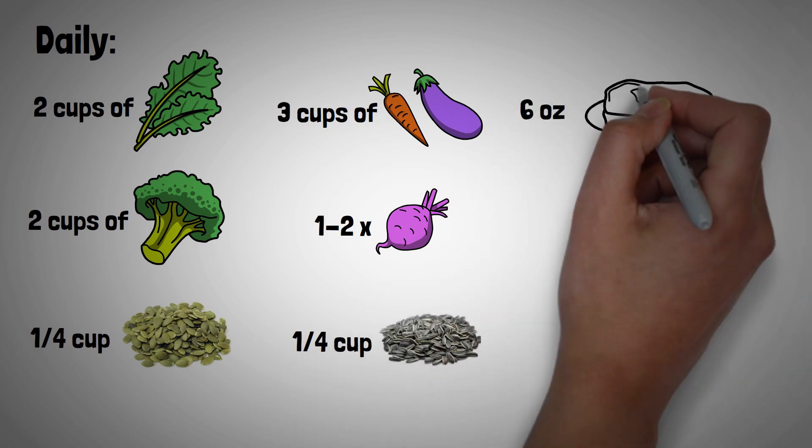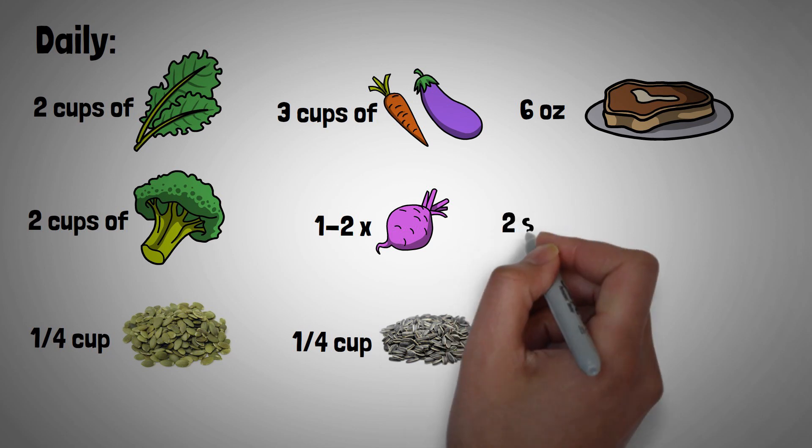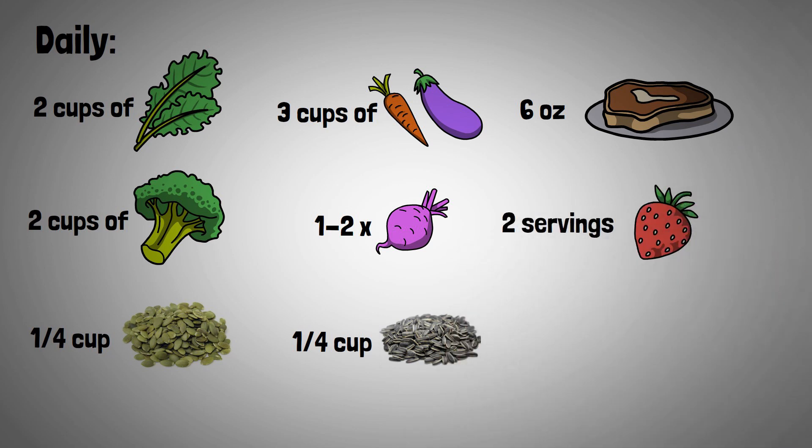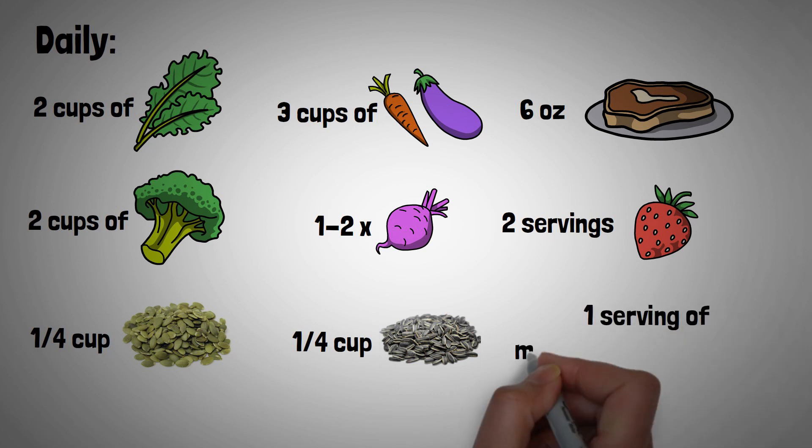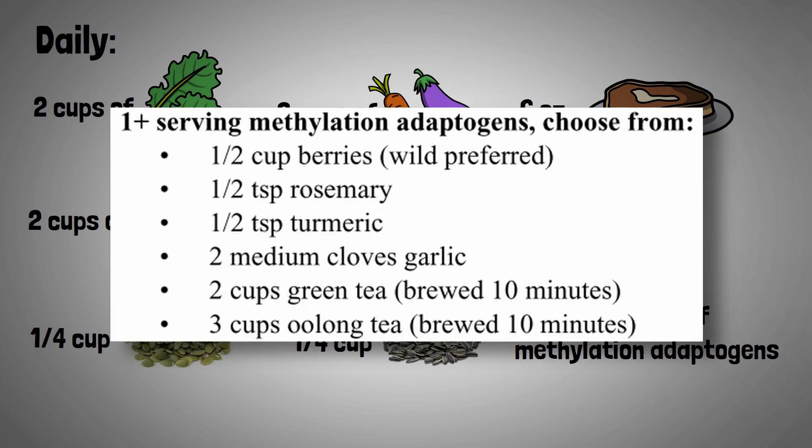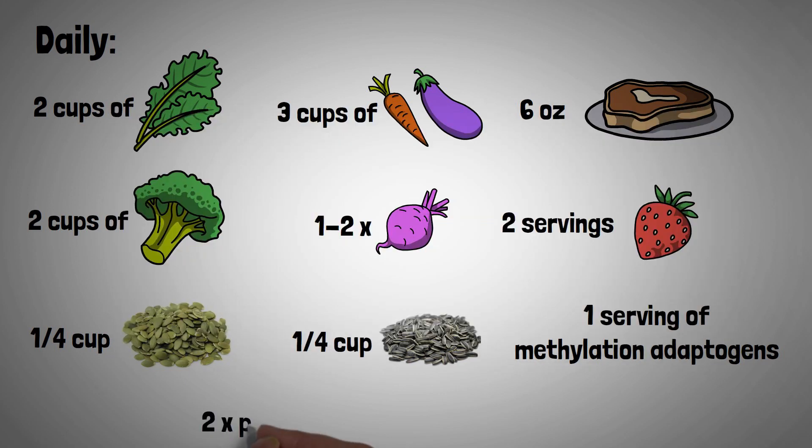about 6 ounces organic animal protein, 2 servings of low glycemic fruits and, last but not least, 1 serving of methylation adaptogens, which can be any of those. They also supplemented with probiotics and phytonutrients twice daily.